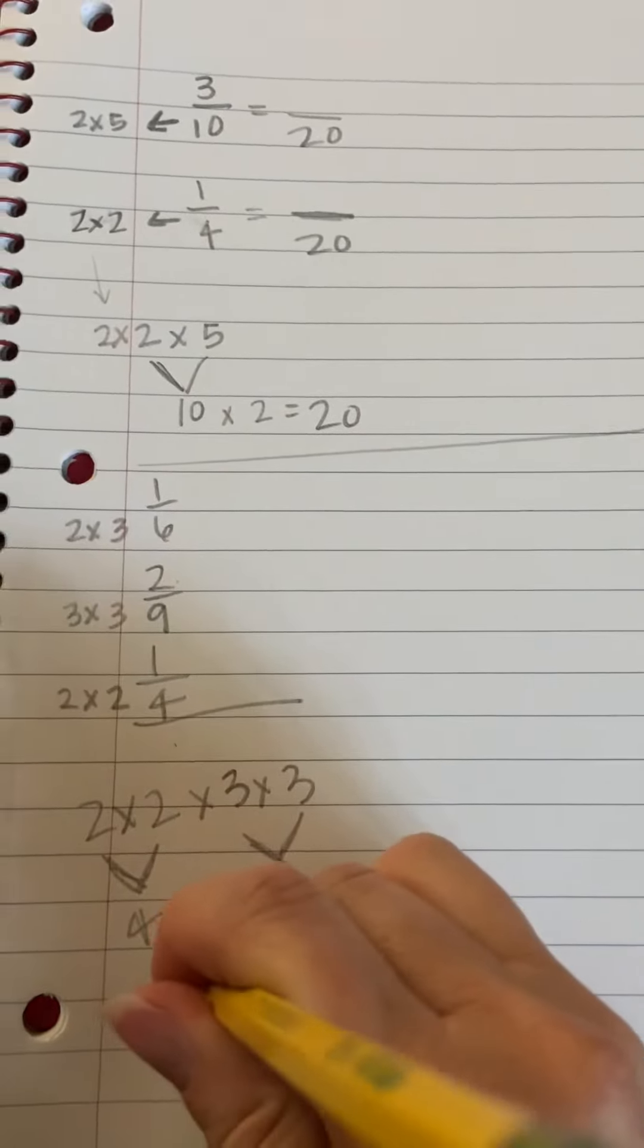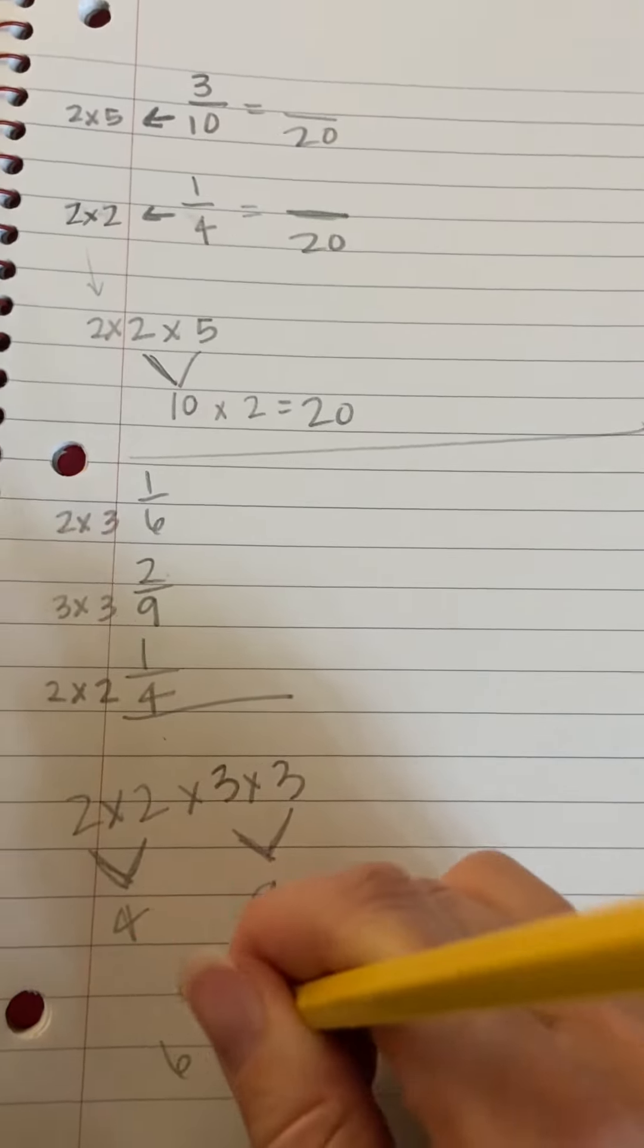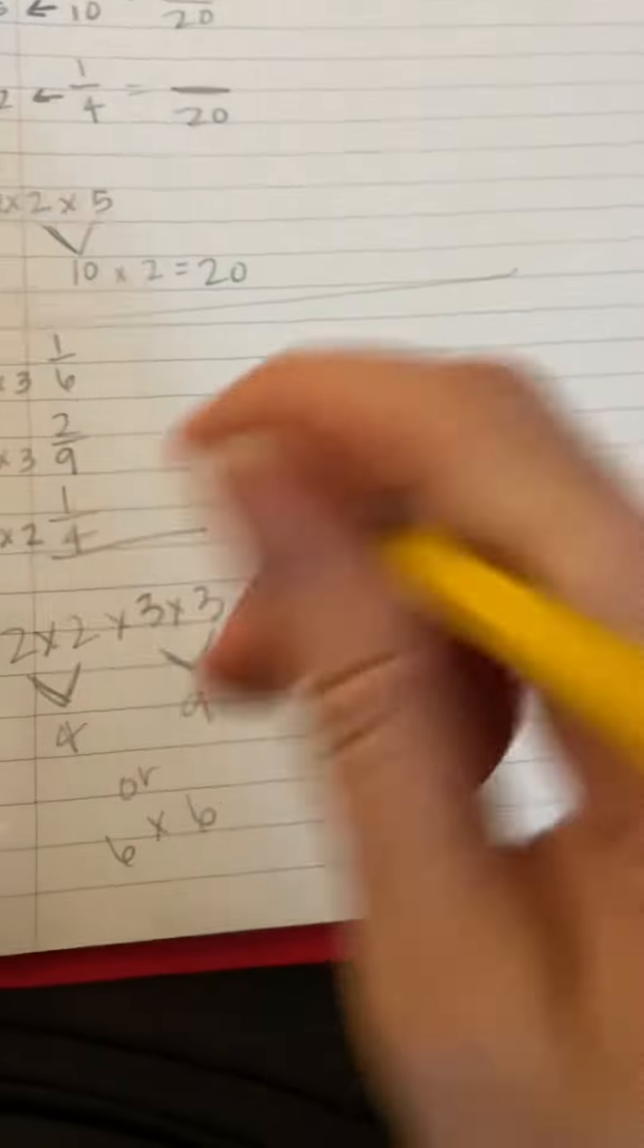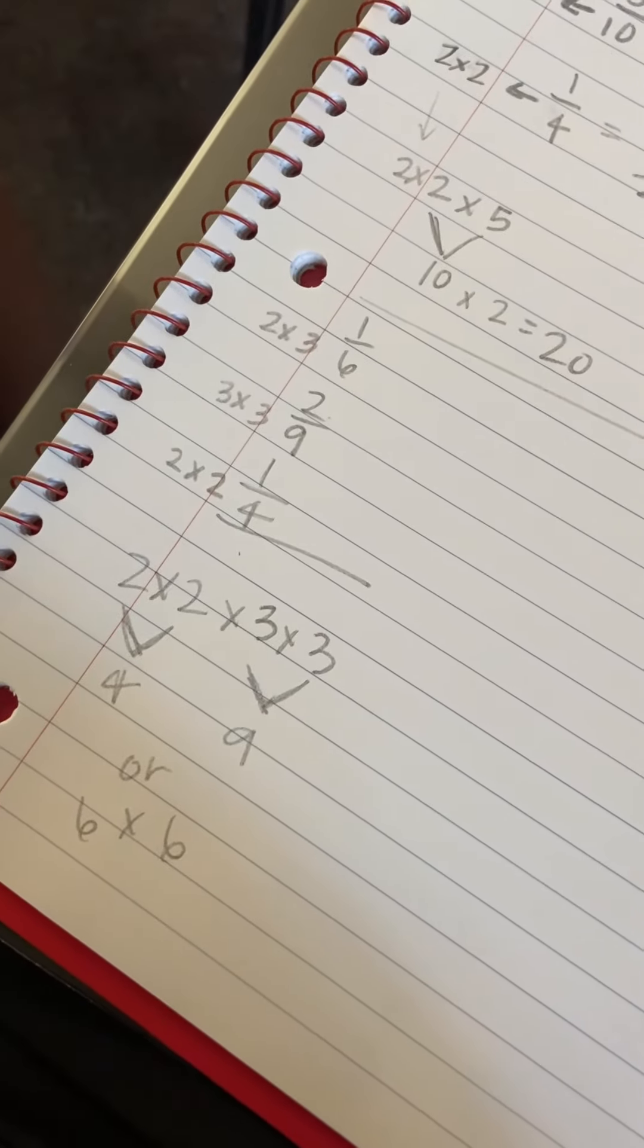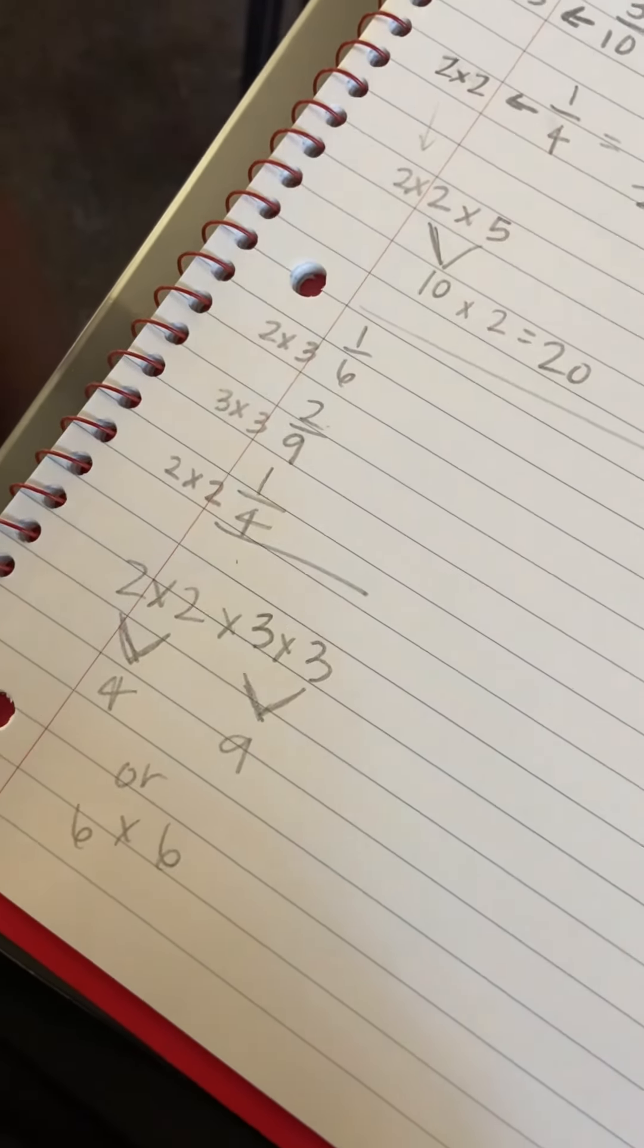You know, if I go the other way, three times three is nine, times two is eighteen, times two is thirty-six. That may be a little bit more complicated. But if I keep my numbers under ten, then I can use my basic tables to come up with the answer. Thank you.